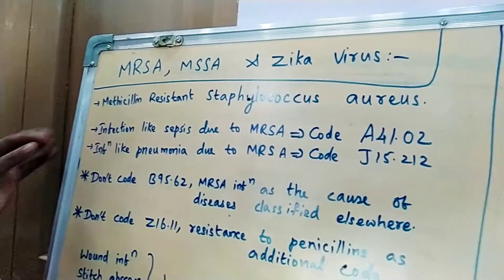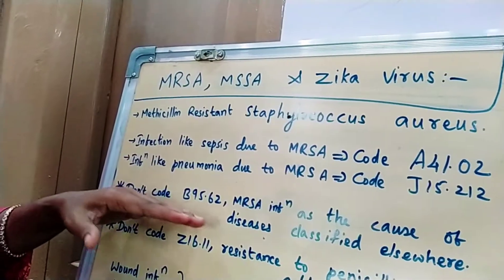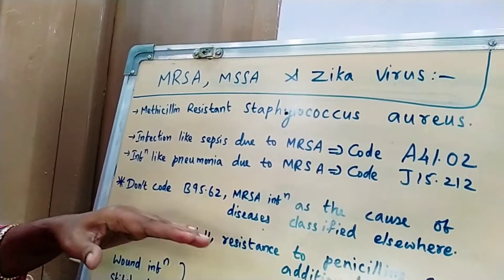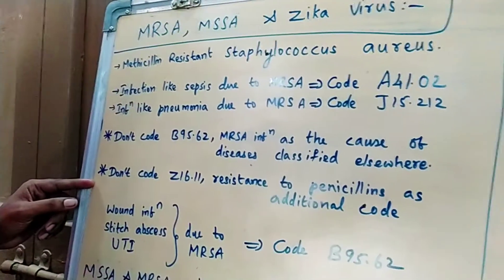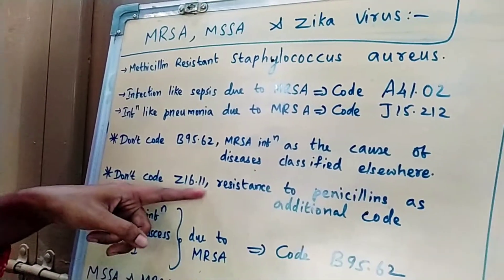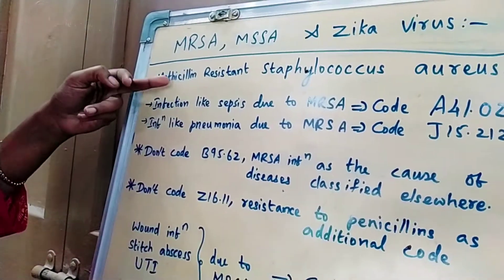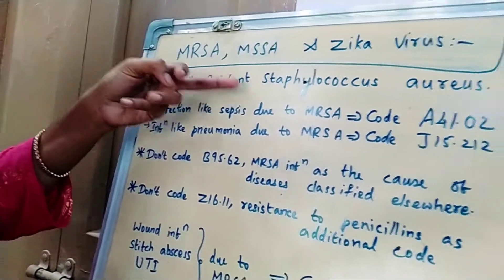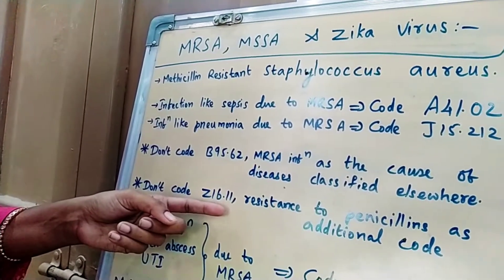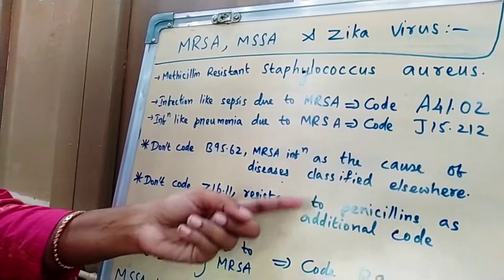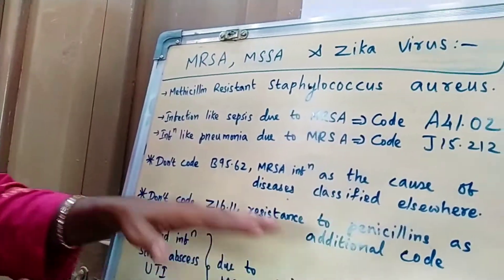When there is a combination code, we should never give B95.62 — that is 'MRSA infection as a cause of diseases classified elsewhere.' Also, never code Z16.11, because the combination code already states methicillin-resistant. Never give Z16.11, whose description is 'resistance to penicillin,' as an additional code.